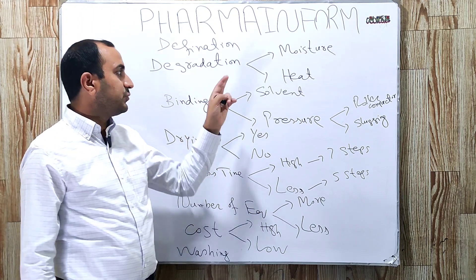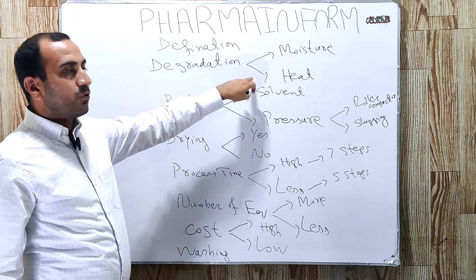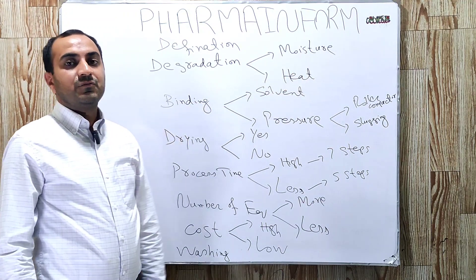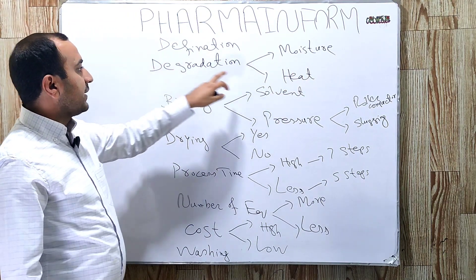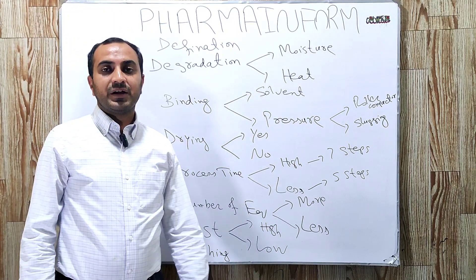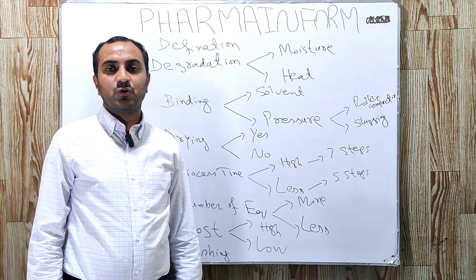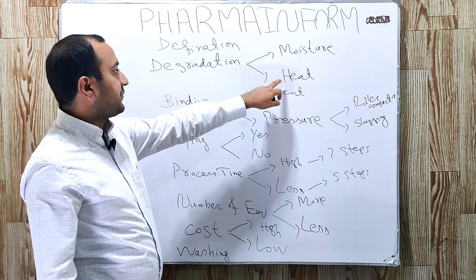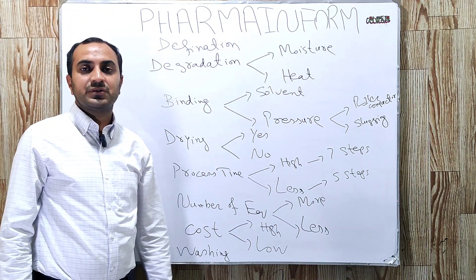Wet granulation process is used for those products which are not degraded by moisture and heat. Dry granulation is used for those products which are sensitive to moisture and heat - meaning dry granulation is used for products which are degraded by moisture and heat.